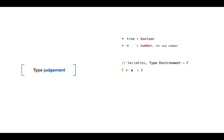For variables we use the concept of a type environment, denoted by the Greek letter gamma. What is the type of a variable x? We don't know — we have to look in the environment. The type environment gamma proves that the type of x is some type t; it might be a number or boolean, depending on the initial value assigned. In static type checking, the variable holds the type — not the value as in dynamic or untyped systems where the value holds the type tag — but a variable is assigned a type in the type environment.